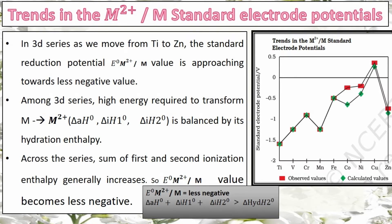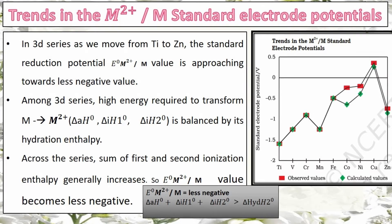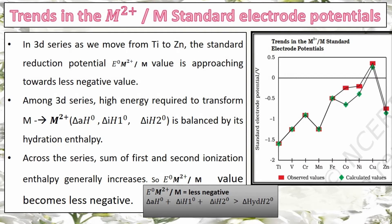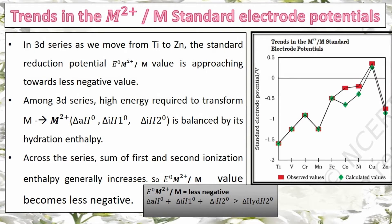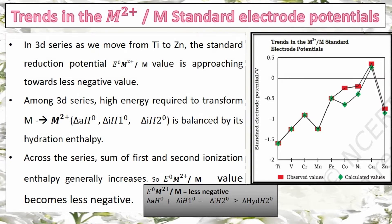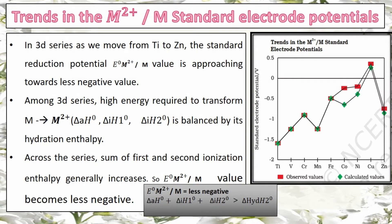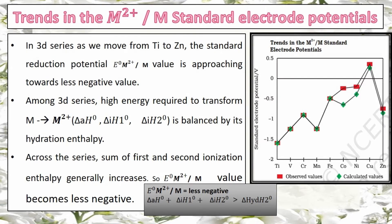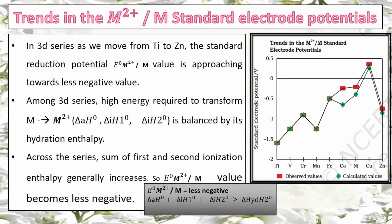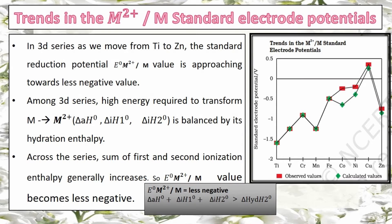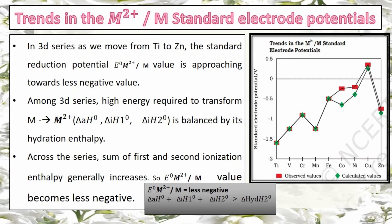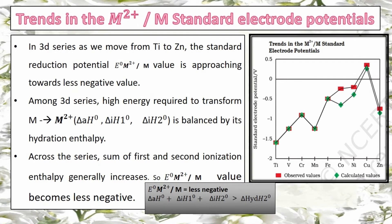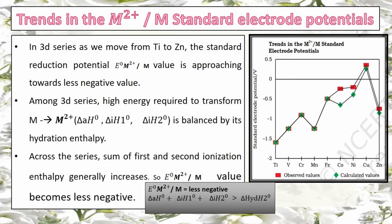As we move across the series, effective nuclear charge increases, so first and second ionization enthalpy values generally increase. If the atomization enthalpy and first and second ionization enthalpies have greater values than the hydration enthalpy, then the E° value becomes less negative, because ionization and atomization enthalpies are positive while hydration enthalpy alone is negative — energy is released.